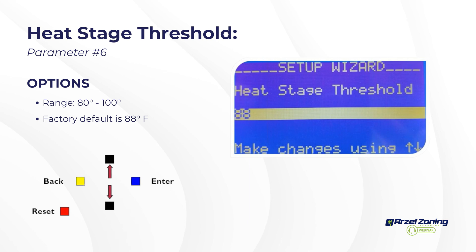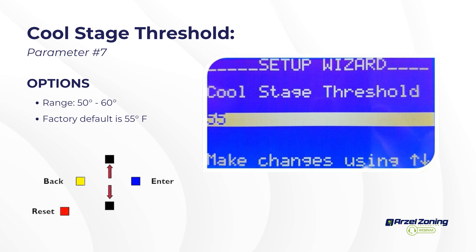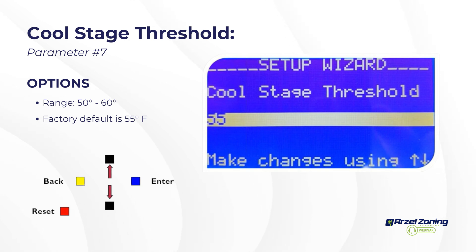For an all-electric system W1 is the next stage; otherwise the system switches over to the gas furnace. The cool stage threshold defaults to 55°F — if the air conditioner cannot maintain 55° leaving air temperature on Y1, it stages up to Y2 for second-stage compressor operation. This works independently of blower operation, so you can run a low-stage blower while running the compressor at a higher stage to remove or add more heat.